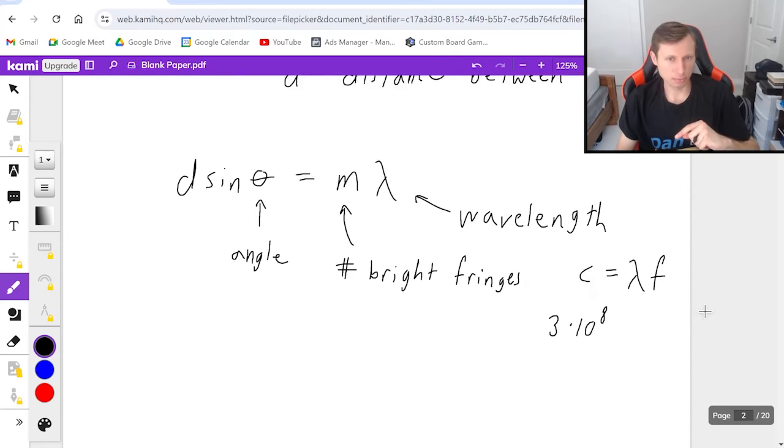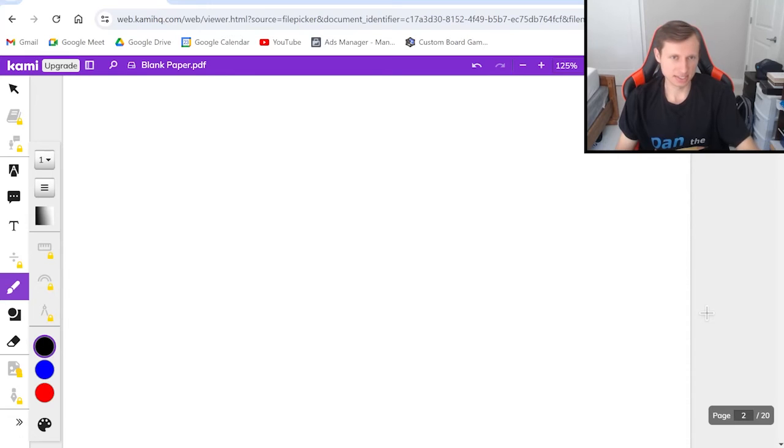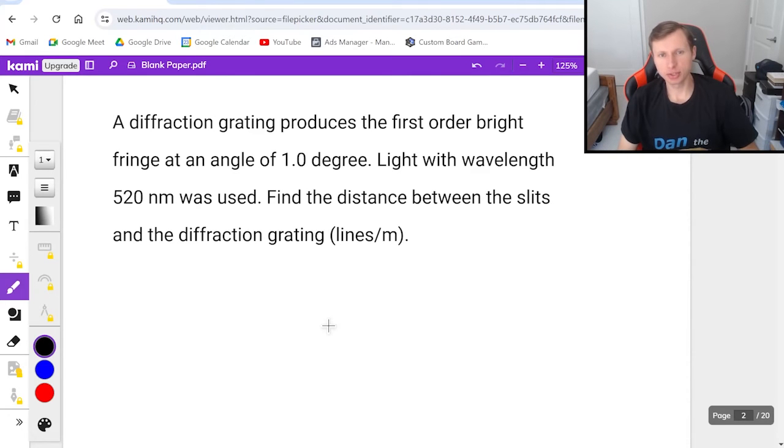Now let's do a couple of example problems to hone in on our skills. A diffraction grating produces the first order bright fringe at an angle of one degree. Light with wavelength 520 nanometers was used. Find the distance between the slits and the diffraction grating in lines per meter.